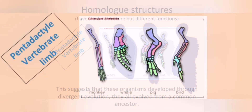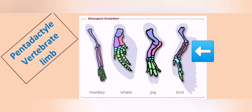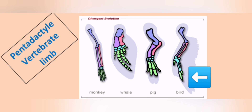Homologous structures have similar structure but different functions. If you look more closely, you can see there is a humerus in all four, an ulna and a radius in all four, and fingers in all four — just different lengths, and sometimes the bones are fused. So in a monkey's arm, a whale's flipper, a pig's front leg, and a bird's wing, there are the same bones, just modified to perform different functions. This shows that these four organisms had a common ancestor which had these similar bones.